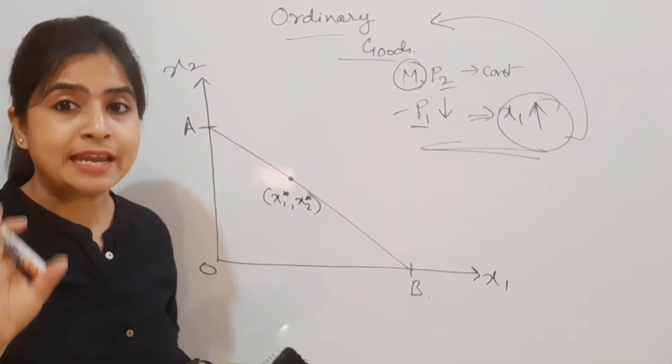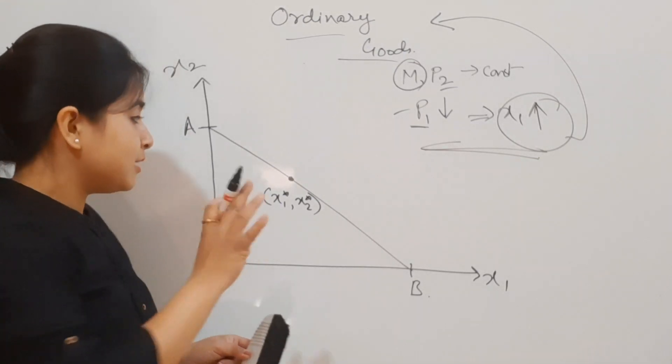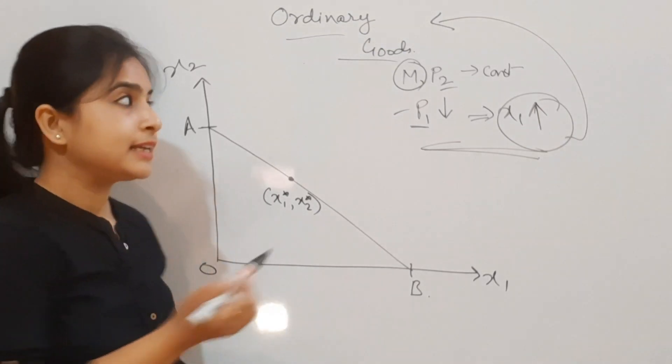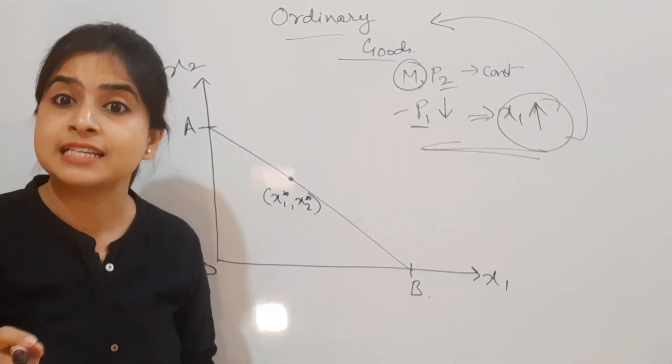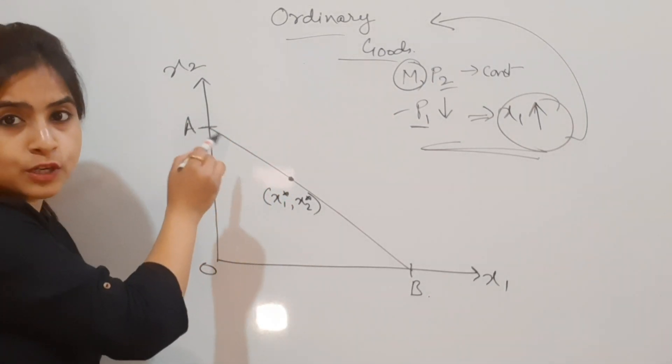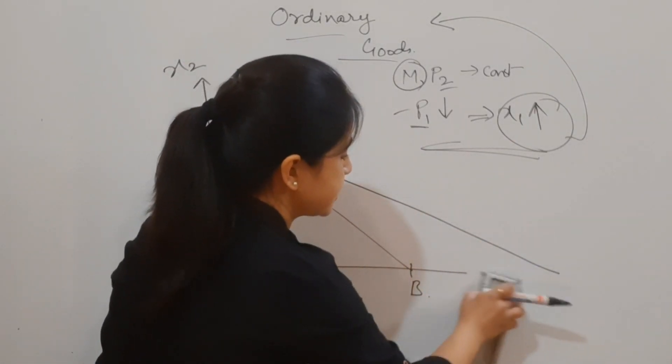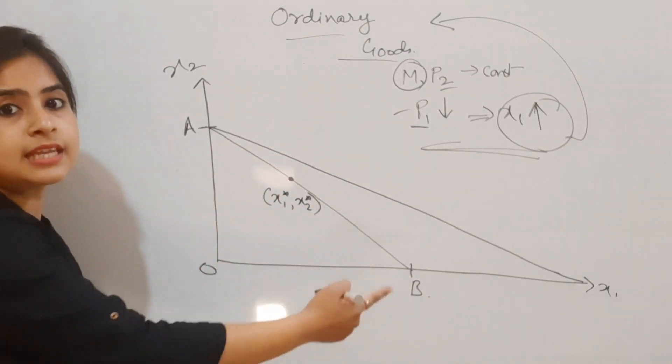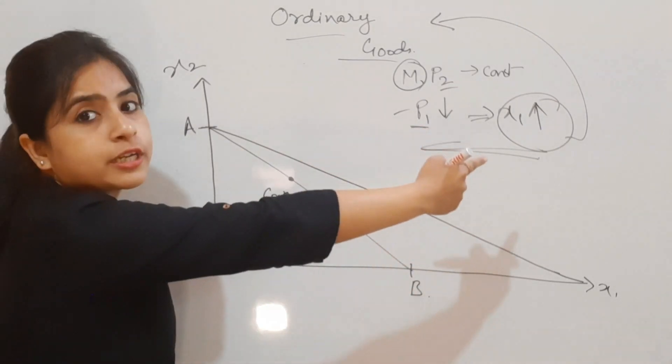If p1 is reducing, it implies x1 should go up. Since p2 remains constant and only p1 is falling, even after purchasing the previous amount of x1, there's some income left. It's actually an increment in the budget level, which we can plot as a change in the budget line.